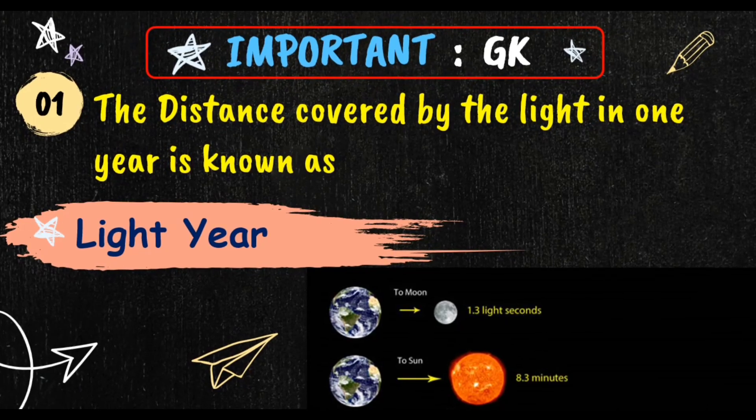Light year is the distance covered by light in one year. In other words, we can also say that it is the distance that light travels in one year.